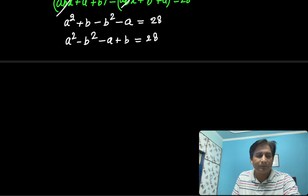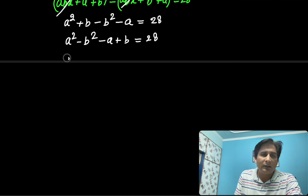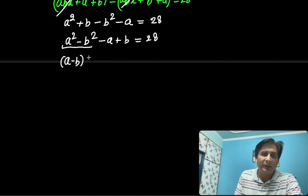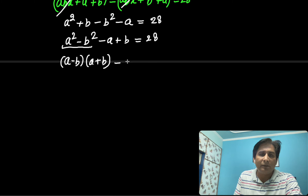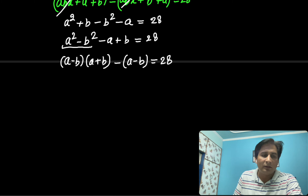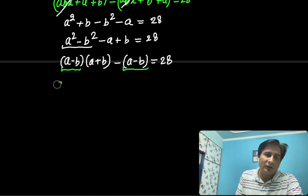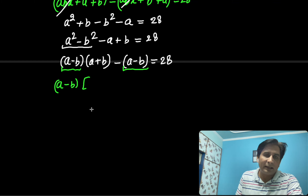Rearranging: A squared minus B squared minus A plus B equals 28. A squared minus B squared can be written as (A minus B)(A plus B), and taking minus common from the remaining terms gives minus(A minus B). So factoring out (A minus B): (A minus B)(A plus B minus 1) equals 28.